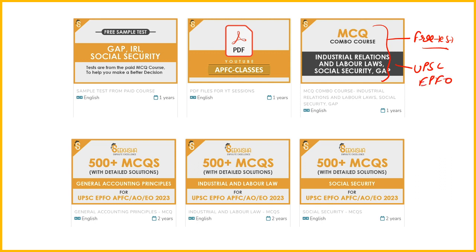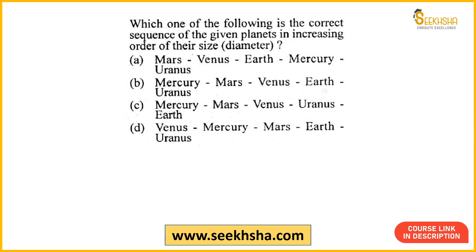So let us quickly start aur pehla question dekhenge. Which one of the following is the correct sequence of the given planets in increasing order of their size or diameter? Toh basically size ke hisaab se aapne planets ko arrange karna hai. Option A: Mars, Venus, Earth, Mercury, Uranus. Option B: Mercury, Mars, Venus, Earth, Uranus. Option C: Mercury, Mars, Venus, Uranus, Earth. Option D: Venus, Mercury, Mars, Earth, Uranus. Yeh completely ek factual question hai — aata hai toh karoge, nahi aata toh guess work se koi fayda nahi hai.